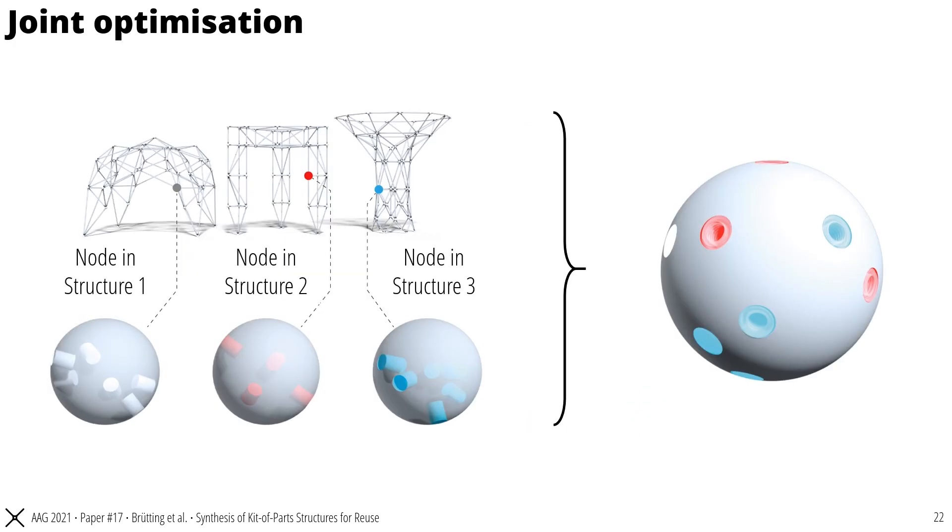After the form finding has been performed, all kit of parts bars fit to positions in multiple structures. The second part of this work considers the design of reusable joints. Here the idea is to combine the unique connection pattern of nodes in different structures into a bespoke joint that can then serve at these different node positions.